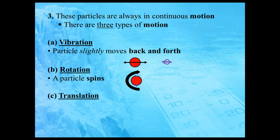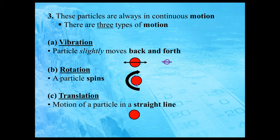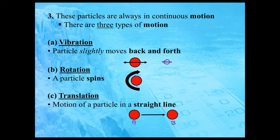The third type of motion is called translation. Translation is the motion of a particle in a straight line. If we had a particle at point A and moved it to point B, it has moved in a straight line — that's translation. So translation is the motion of an object from one point to another, where your position is actually changing, unlike vibration and rotation where your position is not really changing.